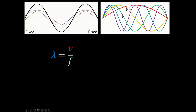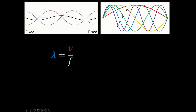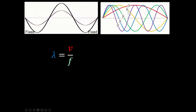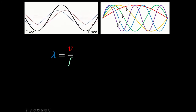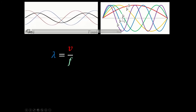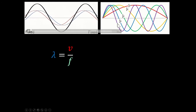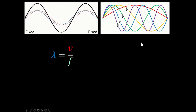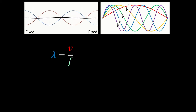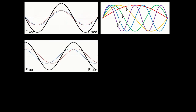The largest wavelength that would fit is half of a wavelength. The next largest, the second harmonic, would be one wavelength, then three halves, four halves, or five halves of a wavelength. These are the conditions for when both ends are fixed.